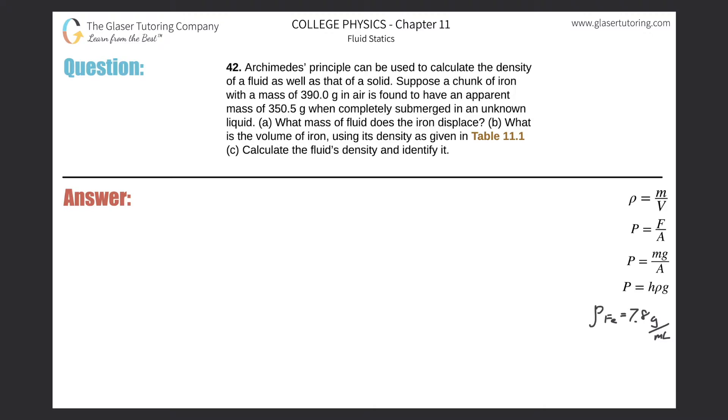Number 42, Archimedes' principle can be used to calculate the density of a fluid as well as that of a solid. Suppose a chunk of iron with a mass of 390 grams in air is found to have an apparent mass of 350.5 grams when completely submerged in an unknown liquid. Letter A, what mass of fluid does the iron displace?